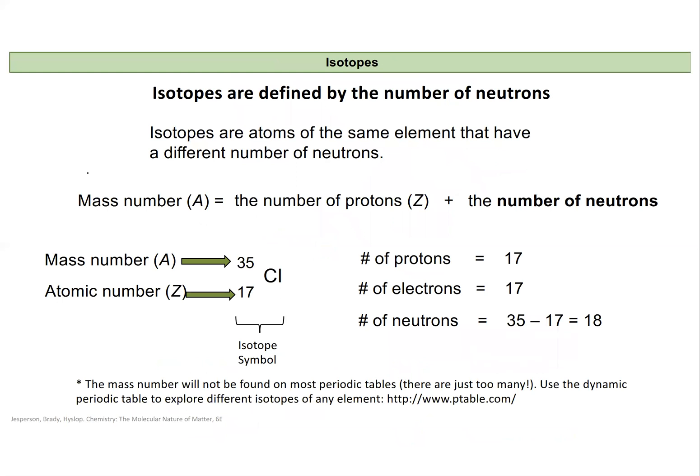The proton number defines our element. An element with one proton will always be hydrogen and an element with two protons will always be helium. Within an element, atoms can have different numbers of neutrons — neutrons have no charge but do have mass. We call atoms of the same element that have a different number of neutrons isotopes of one another. We track the number of neutrons with the mass number, which is not on the periodic table.